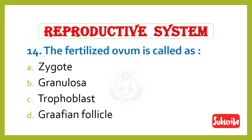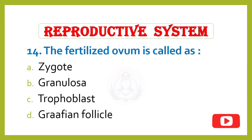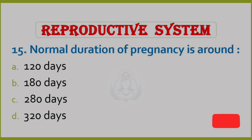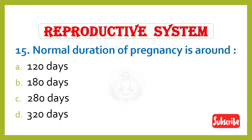Question 14. The fertilized ovum is called: Option A – Zygote, Option B – Granulosa, Option C – Trophoblast, Option D – Graafian follicle. Correct answer is Option A: Zygote.